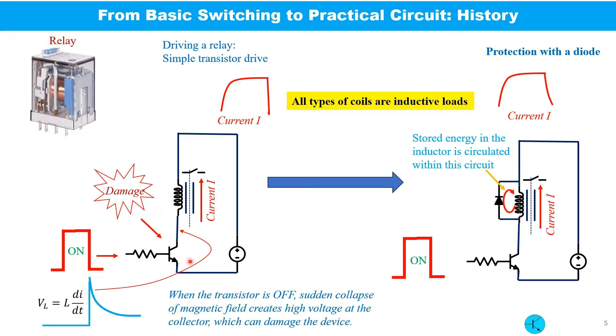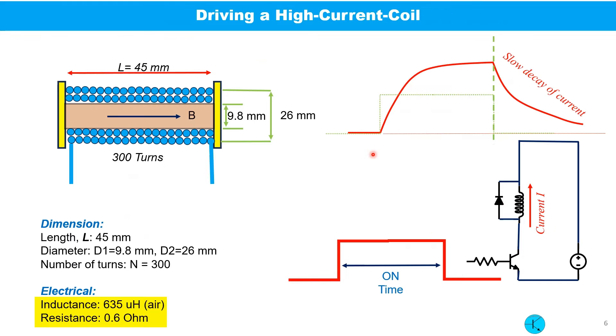You can see the sudden change creates a very high voltage and that will damage the transistor. So to get rid of this thing, you will find that always a diode is associated with the coil. So once the switch is off, the stored energy in the inductor is recirculated with this diode. And the waveform, you can see here, the current through the coil switches off and slowly decaying.